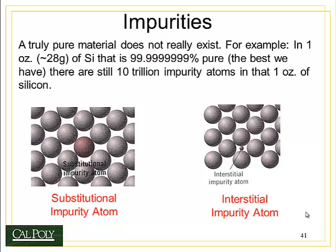Sometimes these vacancies can be filled by atoms that don't belong there — these are called substitutional impurity atoms. Even in the purest of materials, such as ultra-pure silicon, there can still be trillions of impurity atoms in a very small amount of material. In fact, impurity atoms are impossible to get rid of. We even use impurity atoms to figure out where specific materials come from in the world based on their local chemistry and geology.